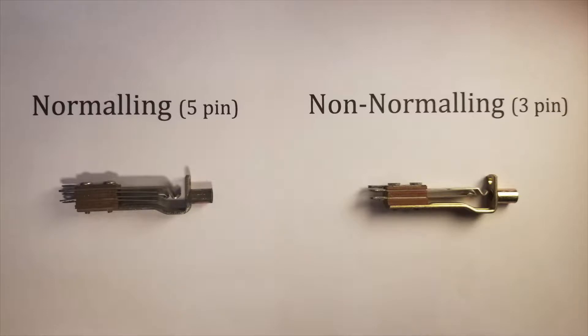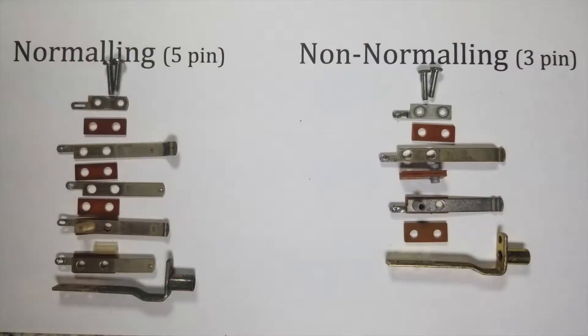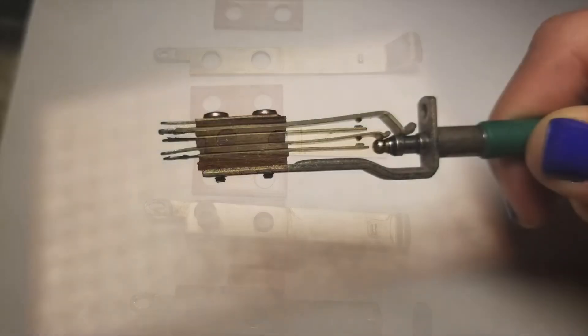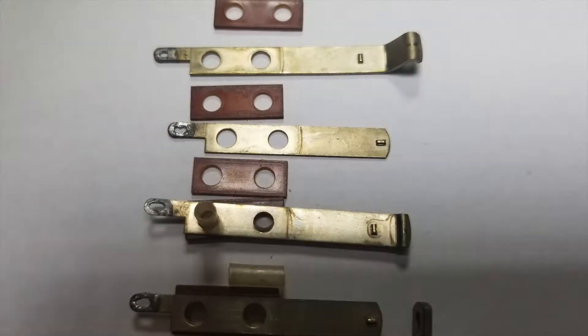A regular non-normalling point only has three connections: the plus, minus, and ground. A normalling point has two extra blades that when left closed, short or connect the signal to the contacts of the plus and minus. This way, whatever signal is seen on the point is also sent to the contacts for routing elsewhere, usually directly below it.